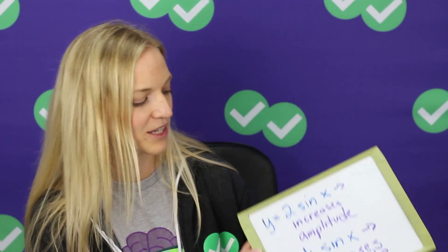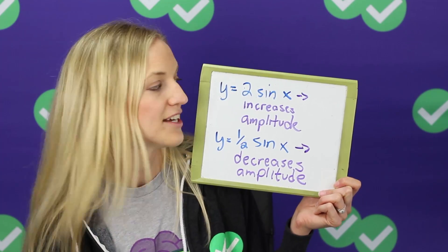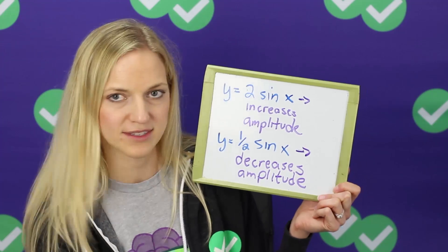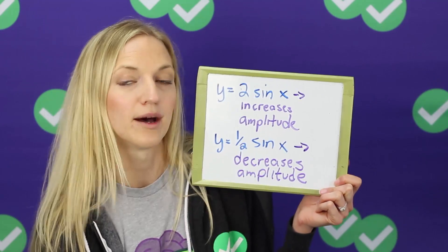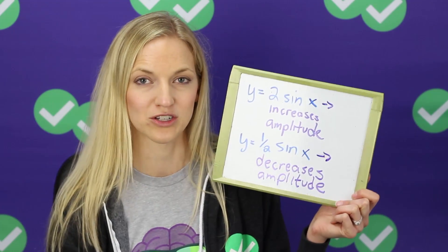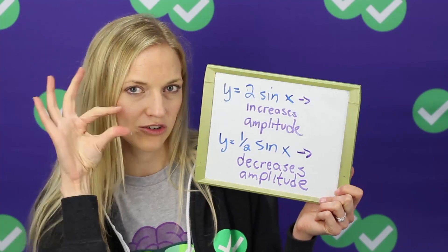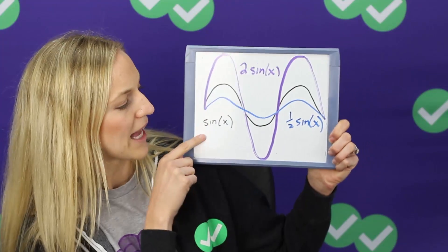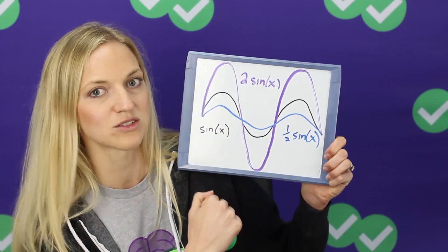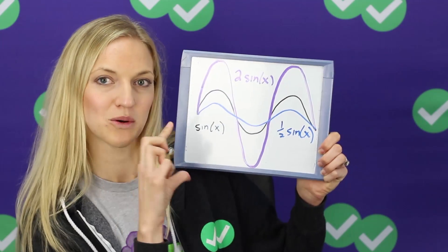Let's talk about changes in amplitude first. Here are a couple of sample equations: Y equals 2 sine of X, and Y equals one half sine of X. Our basic function would just be sine of X. If we put a number in front of it and that number is greater than 1, like 2 for example, that increases the amplitude — meaning it increases how tall the wave peaks are. If it's less than 1, it decreases the amplitude. The black line here is sine of X. Two sine of X, or any number greater than one, is going to make it taller, and a number less than one is going to make it shorter.